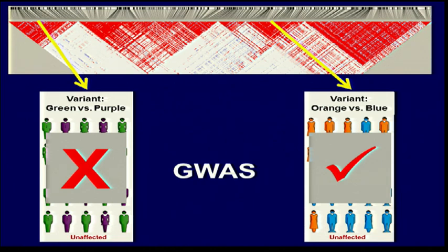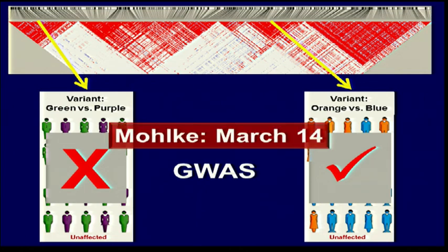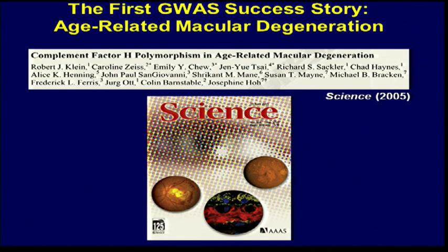The good news is that the GWAS strategy did work. In fact, this was the first example — age-related macular degeneration sort of became the poster child for GWAS studies.